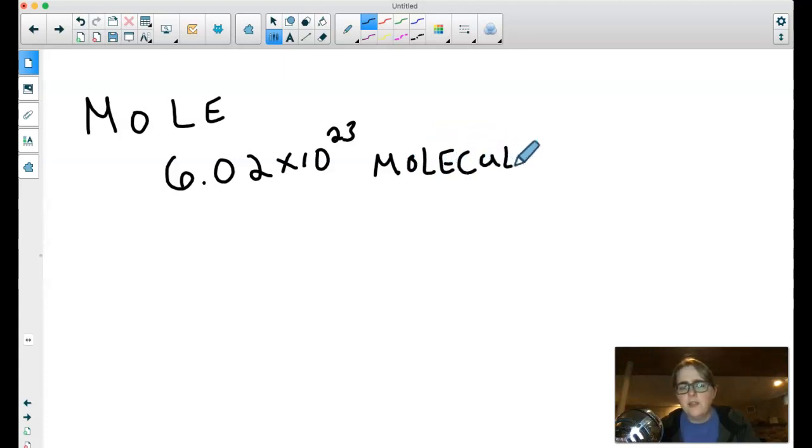And so if you have a pile of some atom and you count it up and you find that you have 6.02 times 10 to the 23rd, that would be one mole of that atom. Now this number isn't really important for what we're going to do with this. What I want you to know is that a mole is lots of molecules and that it's always the same number.